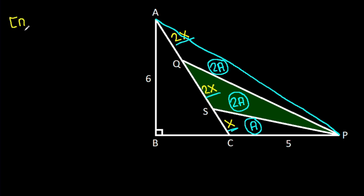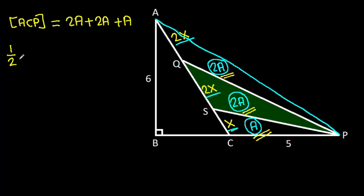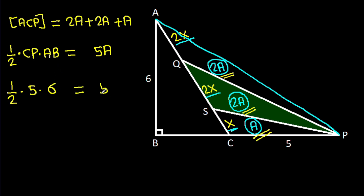Area of ACP equals 2A + 2A + A = 5A. And area of ACP = 1 over 2 times base CP times height AB = 1 over 2 times 5 times 6 = 5A. So 5 cancels and 2 times 3 equals 6, giving A = 3.